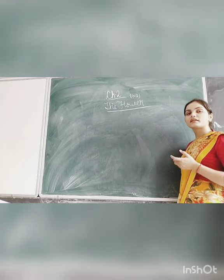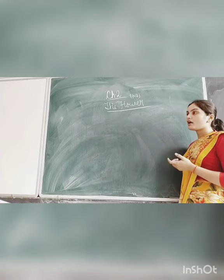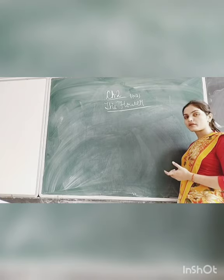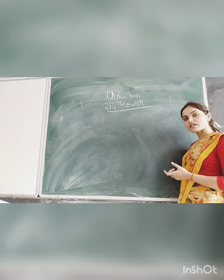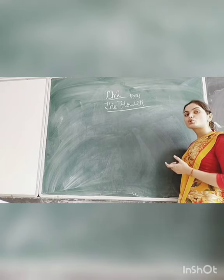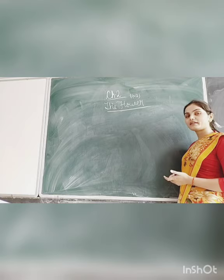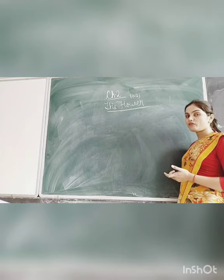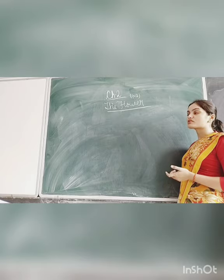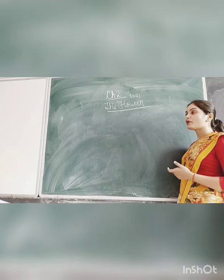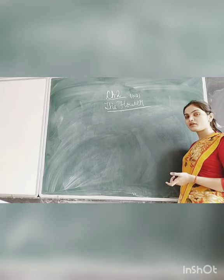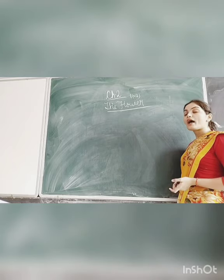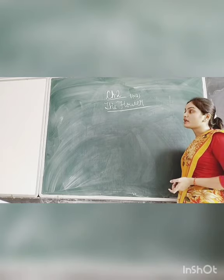We had studied calyx, corolla, androecium, and gynoecium as parts of the flower. Calyx is the group of sepals, corolla is the group of petals. Androecium is the male part of the flower and gynoecium is the female part of the flower. Androecium is commonly known as stamen and gynoecium is commonly known as pistil.